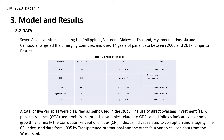Empirical Results: A total of five variables were classified as being used in the study. These include direct overseas investment (FDI), public assistance (ODA), and remittances from abroad as variables related to GDP, capital flows, and economic growth. Finally, the Corruption Perception Index (CPI) was used as an index related to corruption and integrity. The CPI index used data from 1995 by Transparency International, and the other four variables used data from the World Bank.